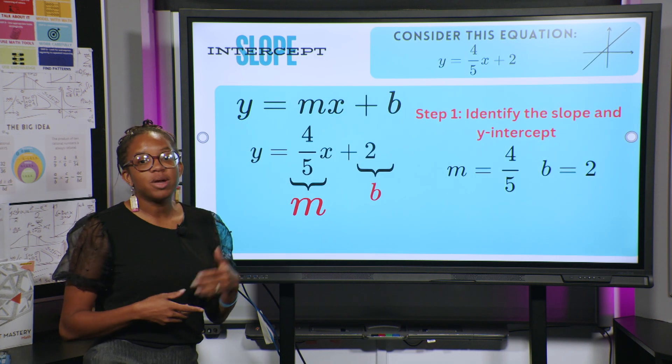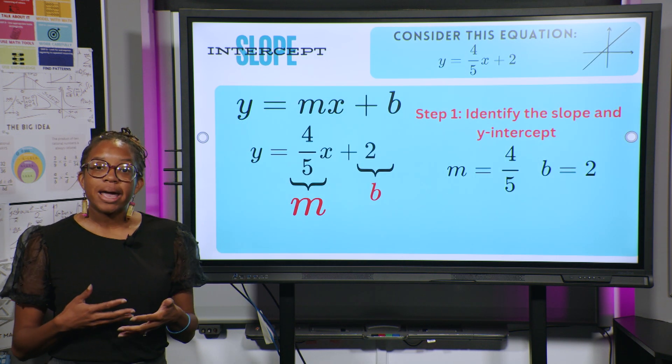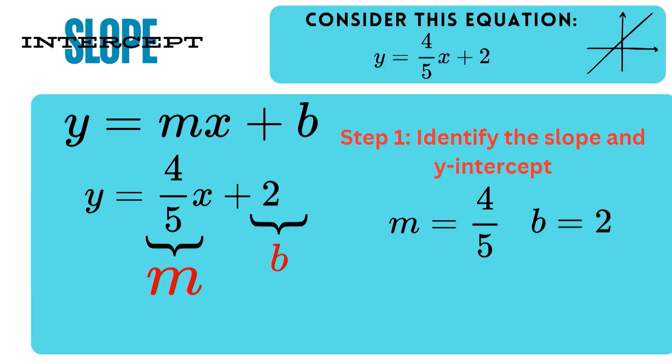So, if we have this equation, y equals 4/5x plus 2. Well, if we know that our slope-intercept form is y equals mx plus b, and we need to identify the slope and the y-intercept first. So our slope is going to be 4/5. That is your m. And then, our b is our y-intercept, which is 2.